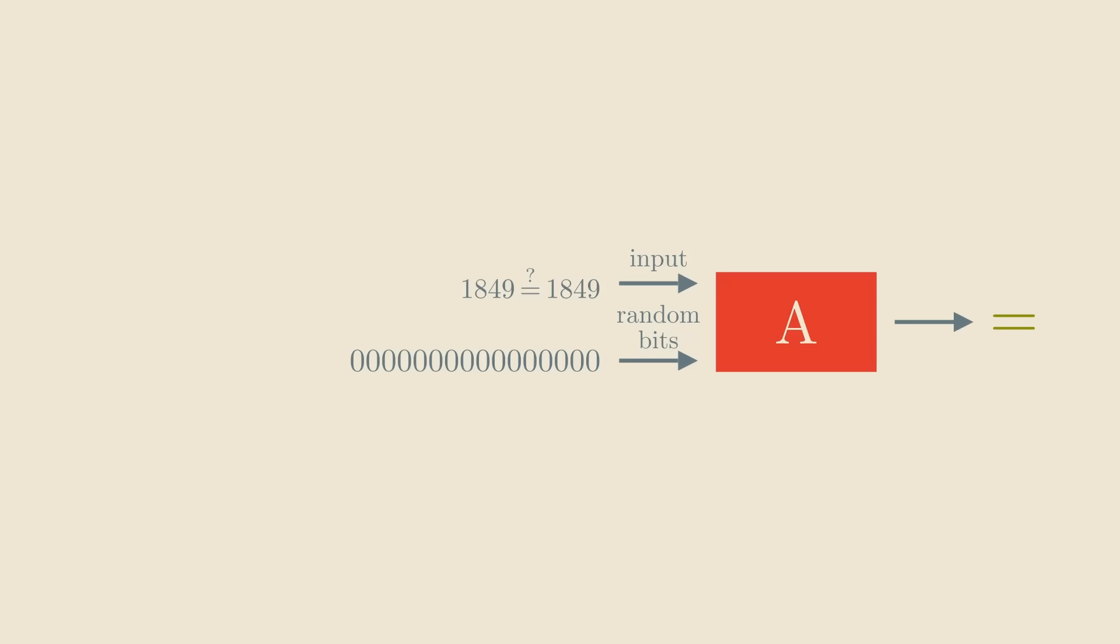So on these inputs, our algorithm is always right. So let's focus on the interesting case where the two expressions are not the same polynomial. In that case, if we run our algorithm with truly random bits, it correctly classifies the two expressions as different with 99% probability.